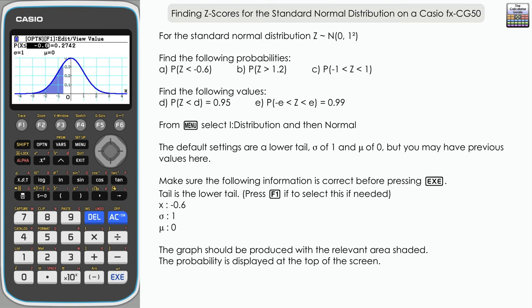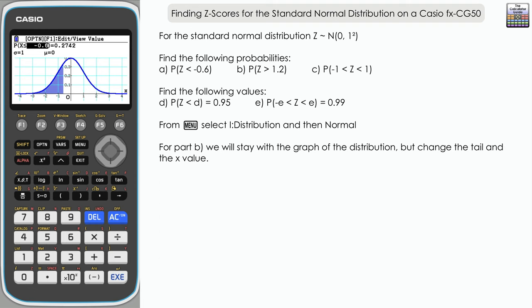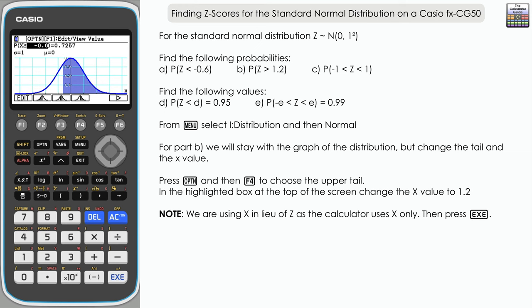Moving on to part B, we're going to stick in the graph part of distribution mode to answer this, but we need to change the tail first. So let's press option, and we want to select the upper tail. We're looking for the probability Z is greater than 1.2, so it's F4 for the upper tail. We also want to change the X value—remember X is being used in lieu of Z—so we've got X on the calculator, but remember we're looking for Z-scores.